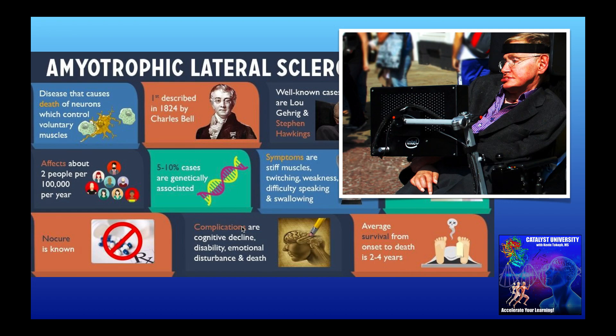One of the most common complications, not listed on the slide, is respiratory failure. As we talked about, the diaphragm is a skeletal muscle — if you can't get the diaphragm to contract, then you can't breathe, and then you die. So respiratory failure is the most common complication. There can also be emotional disturbances and cognitive decline, however those are actually less common. Most cases of ALS are not associated with cognitive decline or dementia.